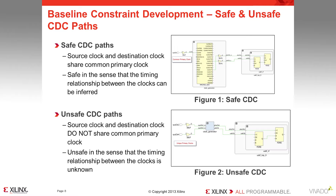A safe CDC path is one in which the source and destination clocks share a common primary clock, or the clocks are synchronous. An unsafe CDC path is one in which the source and destination clocks do not share a common primary clock, or the clocks are asynchronous. In an unsafe CDC path, the timing relationship is unknown — this kind of transfer is shown in Figure 2. For an unsafe CDC path, you will need to ensure proper fail-safe mechanisms like a FIFO or a synchronizer is present.